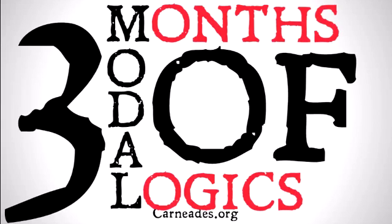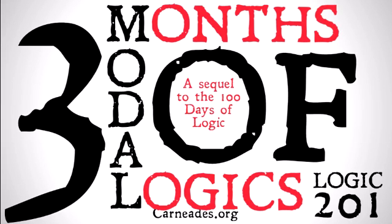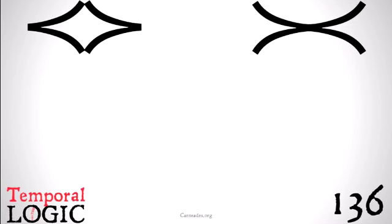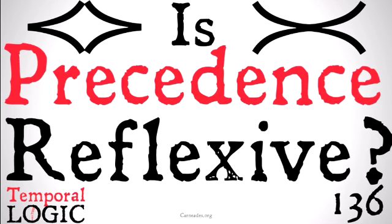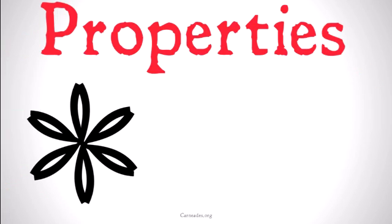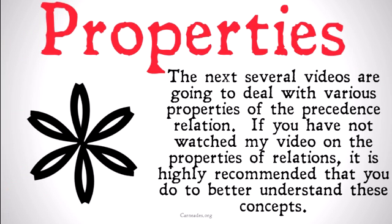Welcome back to the three months of modal logics with carneades.org. This is going to continue to be a sequel to the 100 days of logic, or logic 201. Today we're going to be continuing with temporal logic, looking at the question of whether precedence is reflexive — the precedence relation we've been talking about for a couple of videos now. In the next several videos, we're going to be talking about the various properties of the precedence relation.